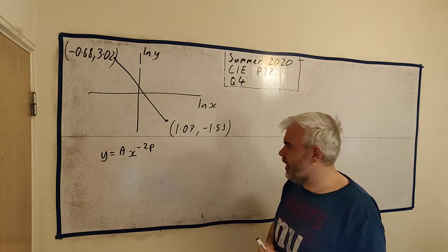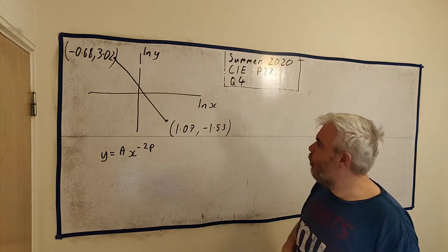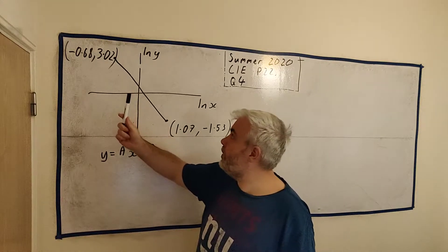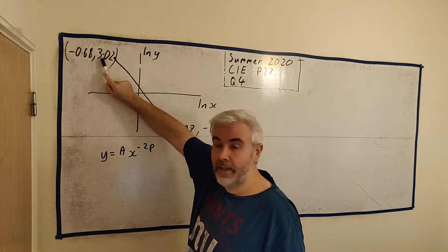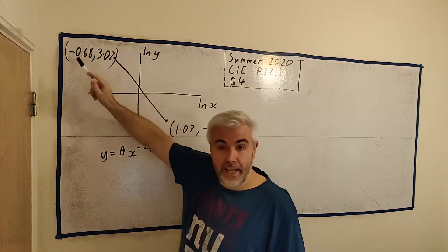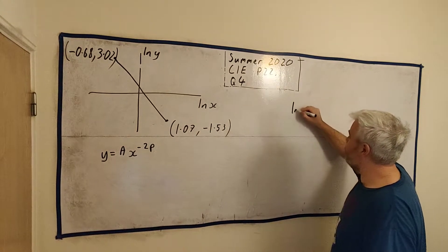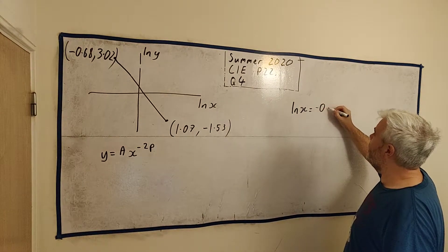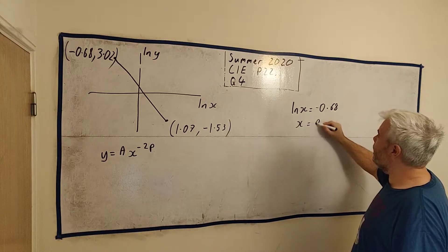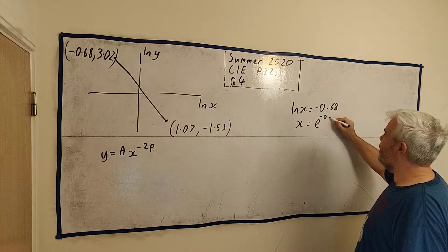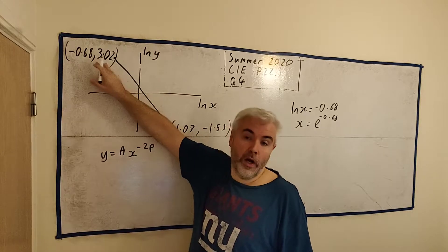Now there's a couple of ways to do this question. Let me just spell out one of the ways and then I'll do the other way. One way is they told us what natural log of x is and they told us what natural log of y is. We could use them to find out what x and y is. So for example, like natural log of x is equal minus 0.68. Well then x is simply equal to e to the power of minus 0.68.